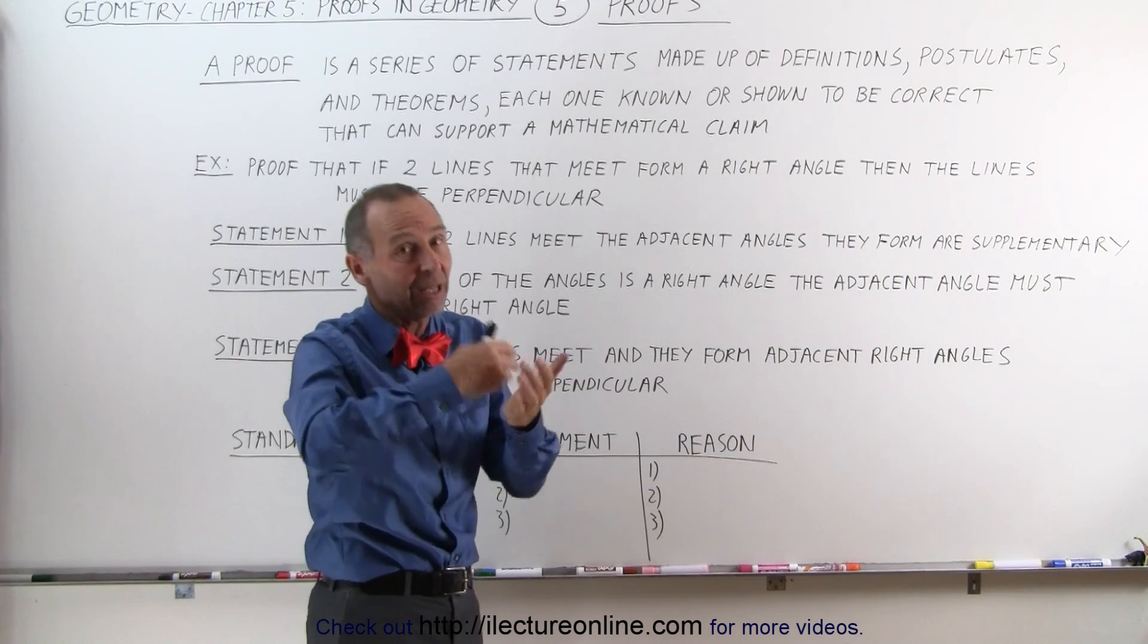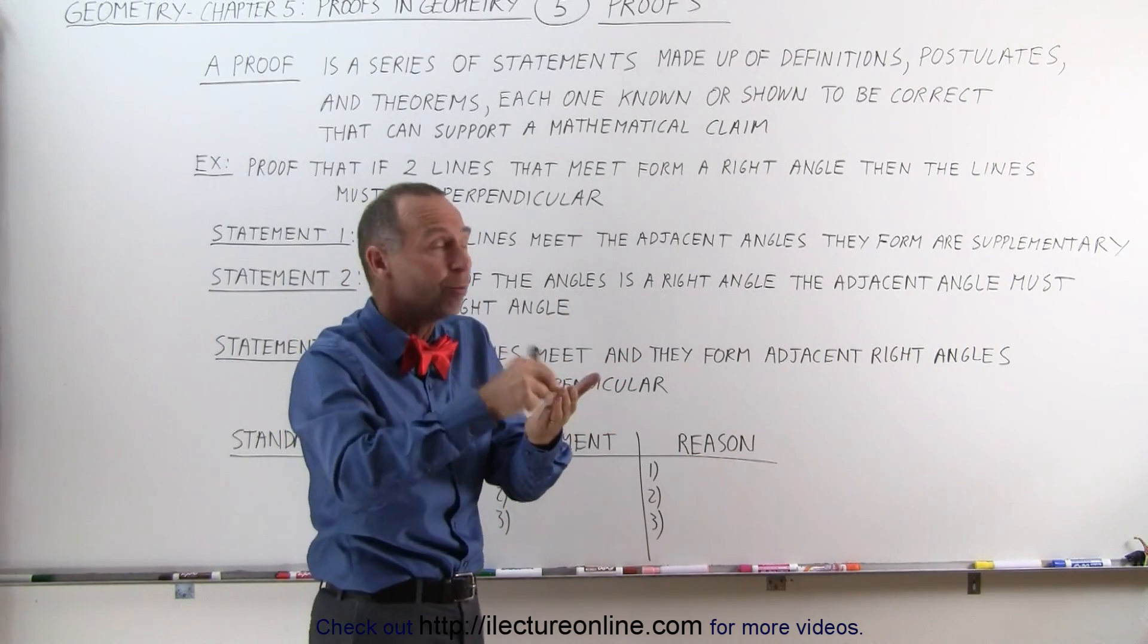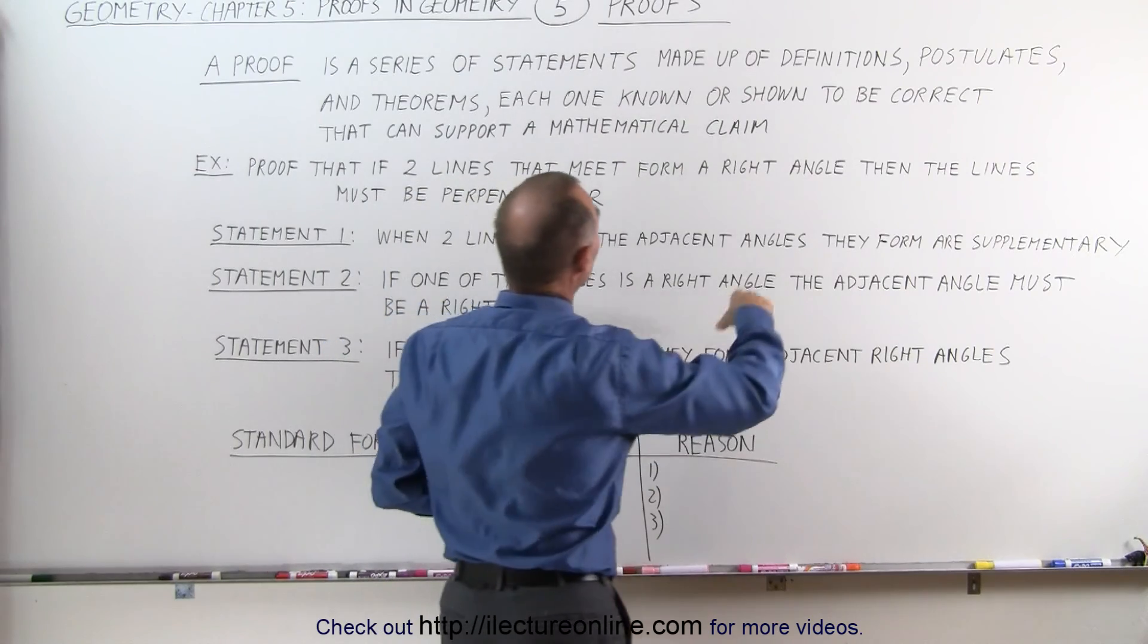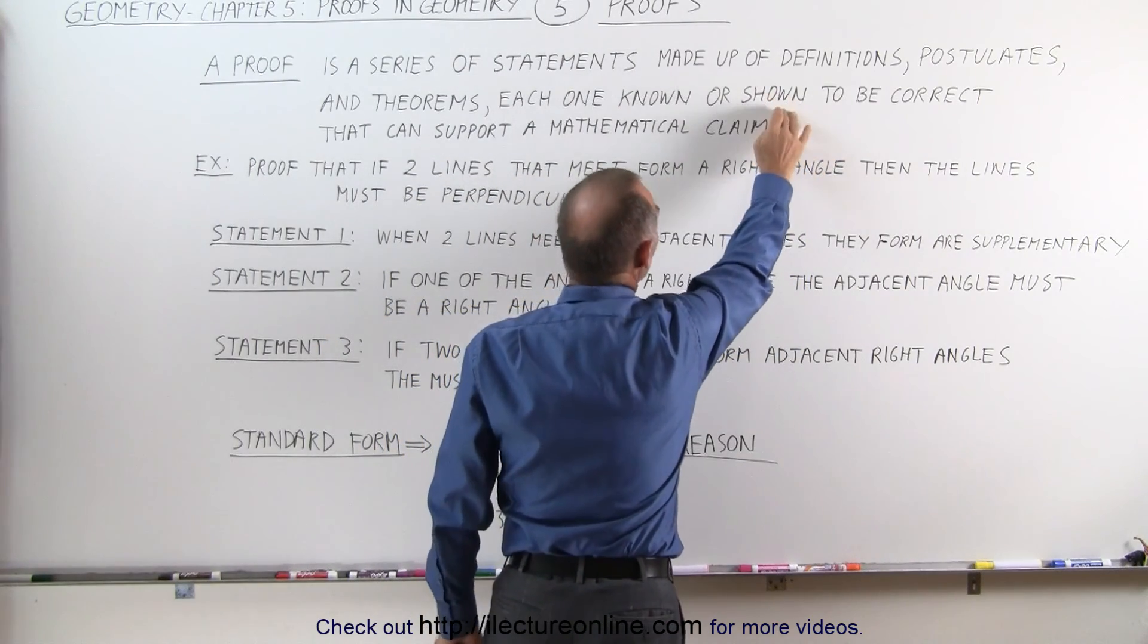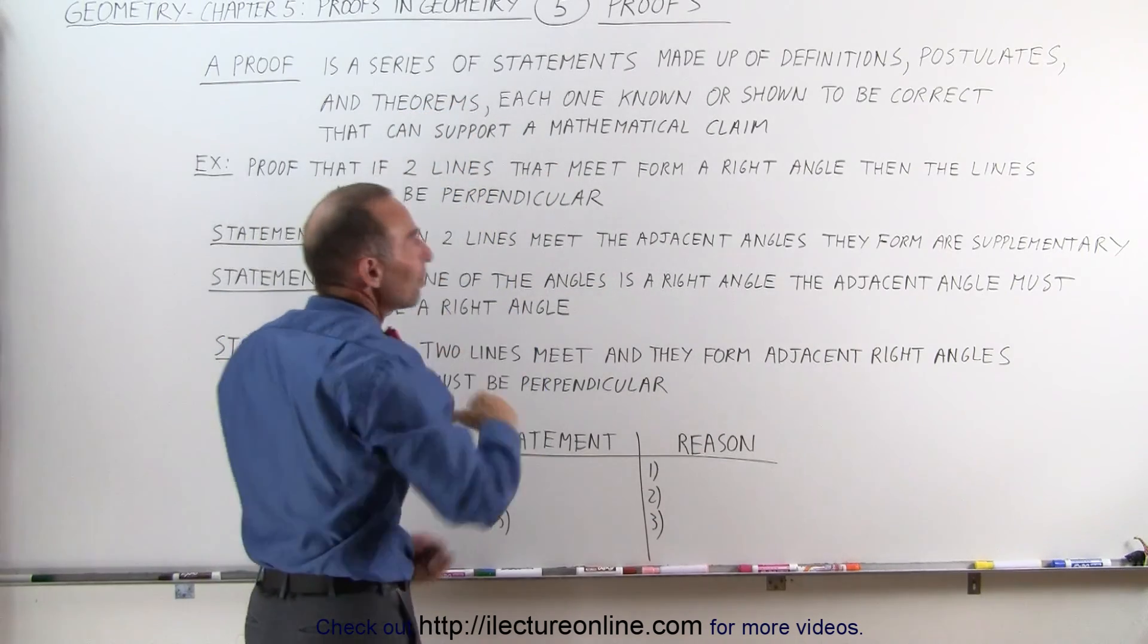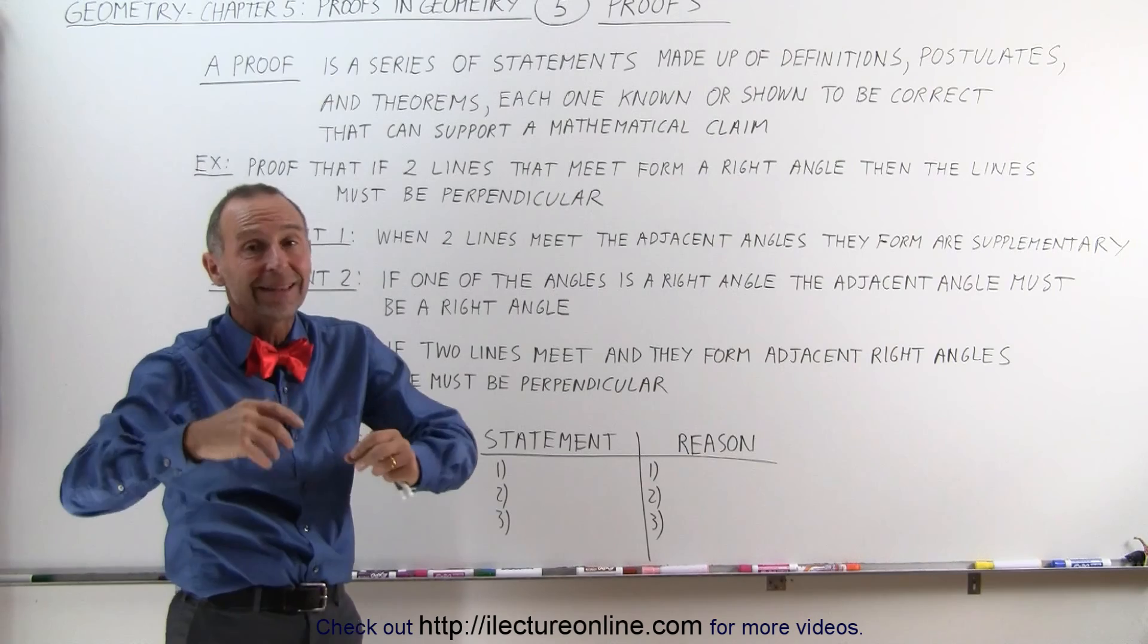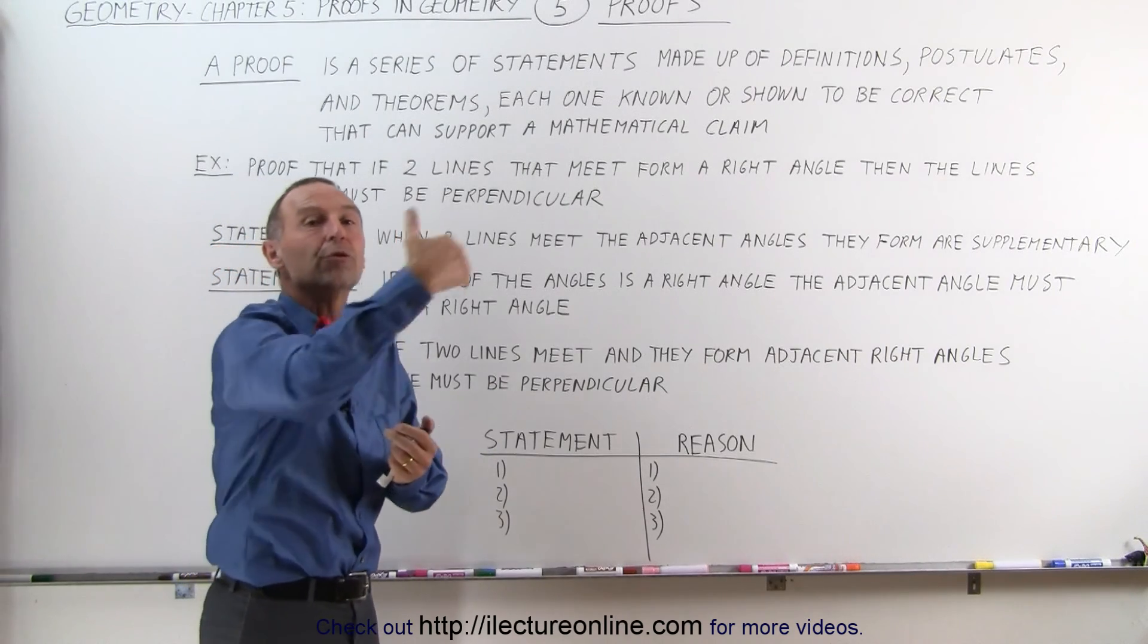We need to make the statement and explain why we can make the statement because of this definition or postulate. Or we need to show that they're correct, and of course that's when we get to theorems. Theorems need to be shown to be correct. Once we've shown a theorem to be correct, then we can use that theorem to prove other things.